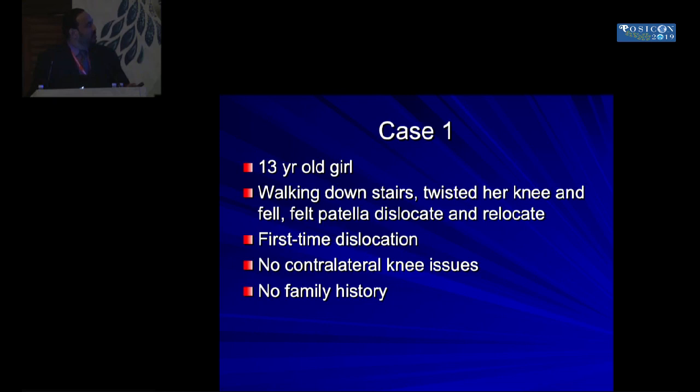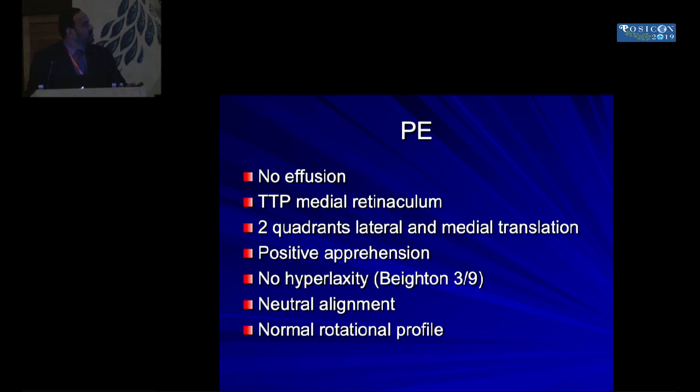We start with case number one: a 13-year-old girl who was walking downstairs, twisted her knee, and felt the patella dislocate and relocate. This was her first dislocation. She had no contralateral knee issues and no family history. On examination, she had no effusion, some tenderness over the medial aspect of the patella, two-quadrant translation medially and laterally, a positive apprehension sign, and a Beighton score of three out of nine. Her standing alignment is neutral and her prone rotational profile is normal. For the sake of the presentation, any measurements I don't mention are assumed to be normal.